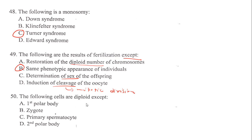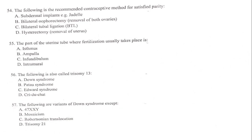The following cells are diploid except: the second polar body, which is haploid. The second polar body can be produced either when the first polar body divides or during the second meiotic division when fertilization takes place. In a normal circumstance, three polar bodies are produced and only one oocyte is produced.